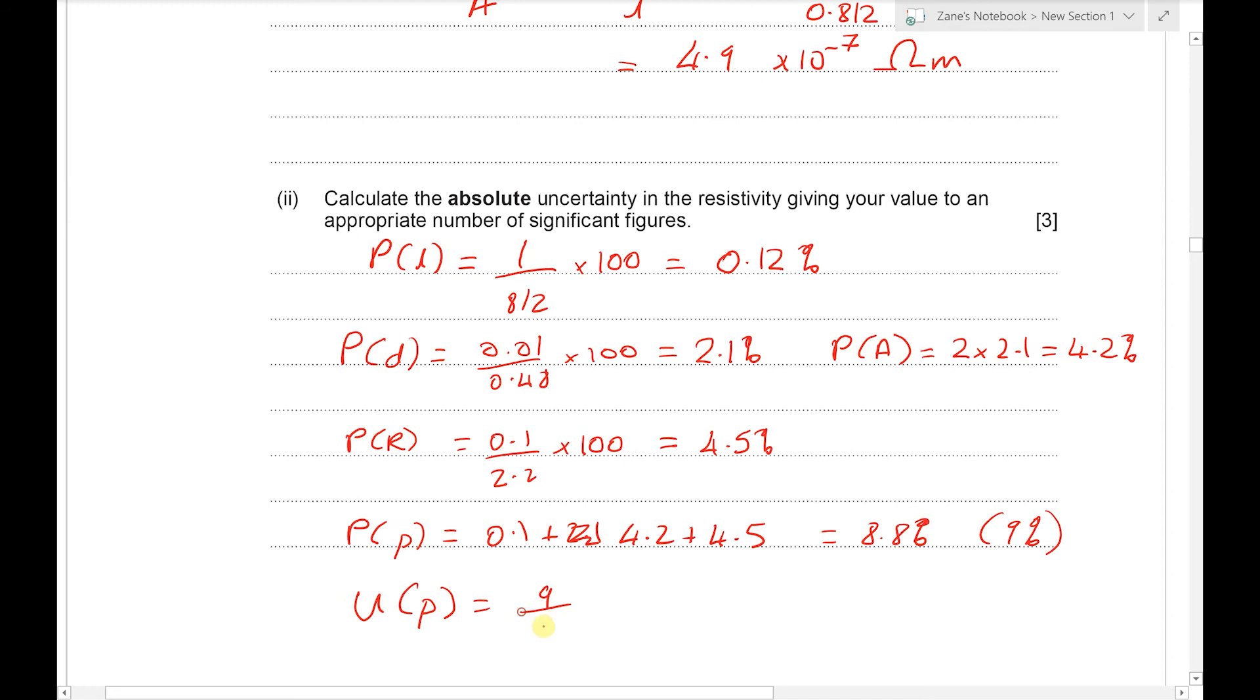we're going to find 9% or 8.8% of the 4.9 times 10 to the minus 7 that we actually worked out for the resistivity. And let's have a look at that. That will give us about 4.3 times 10 to the minus 8.